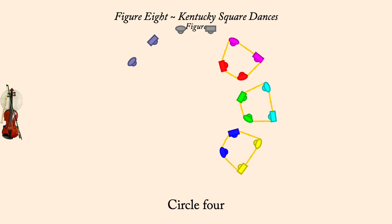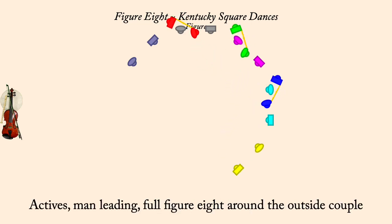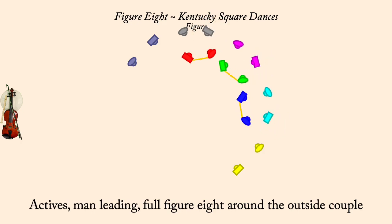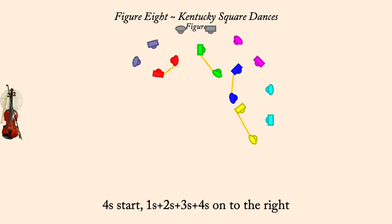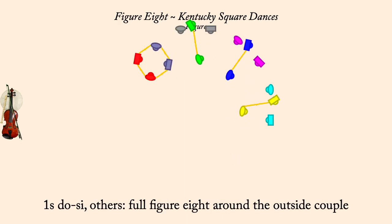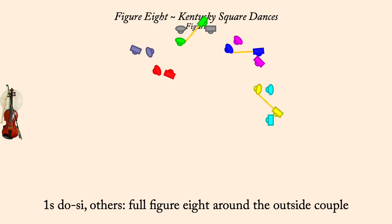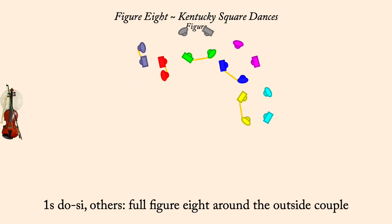On to the right, full figure eight around the outside couple. Circle left four. Next, on to the right, dough C or figure eight. Circle left four.